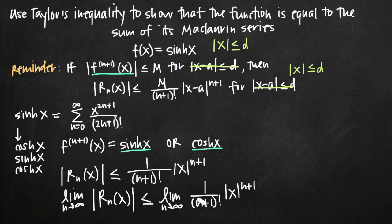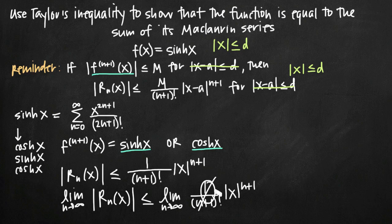If we plug in an infinitely large value for n, we get some infinitely large value plus 1 — still just an infinitely large number. If we take that extremely large value, say 10 million, and compute 10 million factorial, that's a ridiculously large number in the denominator. So we have 1, a constant, divided by a huge number, and as n approaches infinity this fraction approaches 0. Therefore, 0 times |x|^(n+1) is still 0.